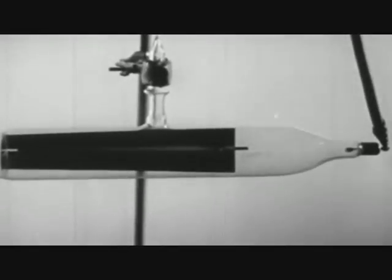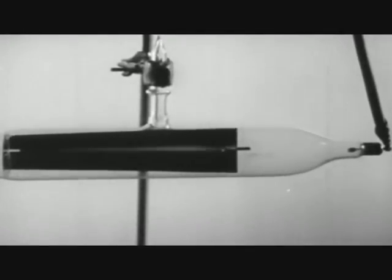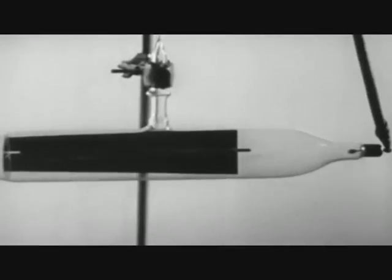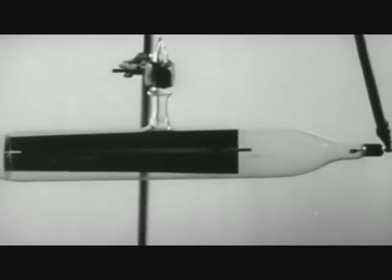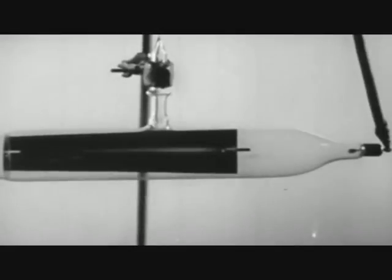To render the path of these charges visible, we have placed a screen of zinc sulfide inside the tube, eliminating all but a narrow beam of charges by means of a slit. When the charges strike the screen, their path is rendered luminous.